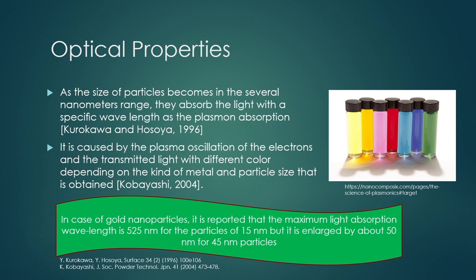The optical properties of nano-size particles change as particle size reaches several nanometers. They absorb light at specific wavelengths through plasmon absorption, caused by plasma oscillation of electrons. Transmitted light shows different colors depending on the kind of metal and particle size. For gold nanoparticles, the maximum light absorption wavelength is 525 nm for 50 nm particles, but is shifted by about 50 nm for 45 nm particles.